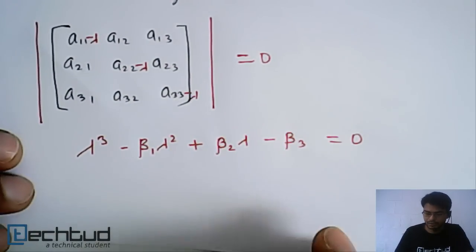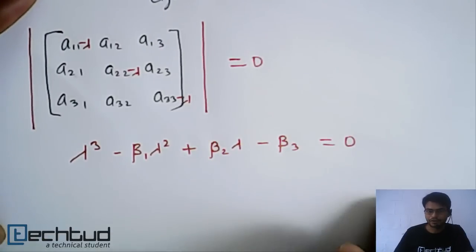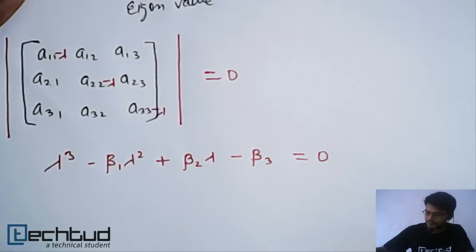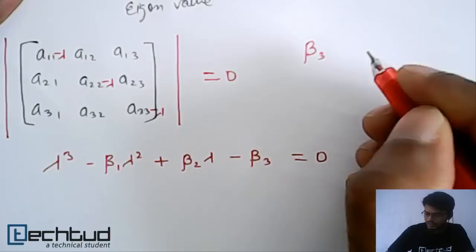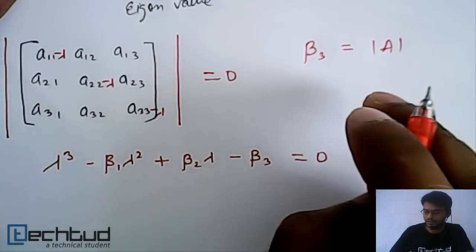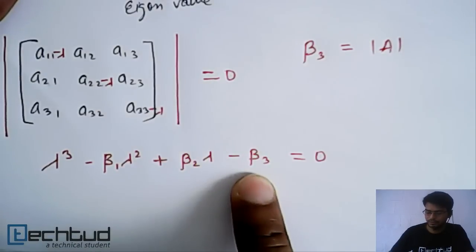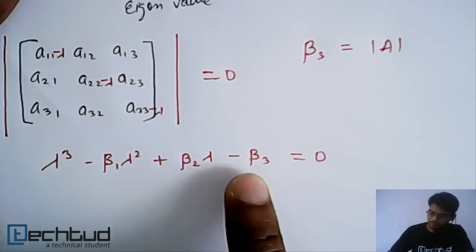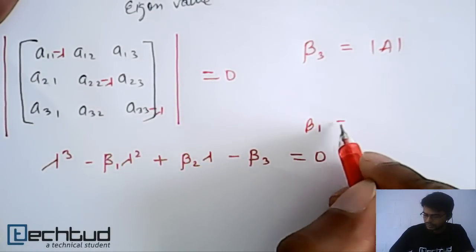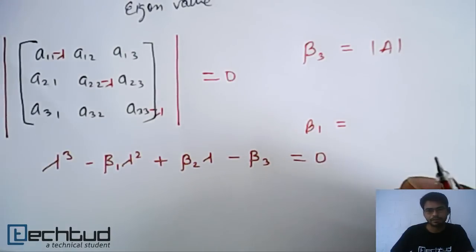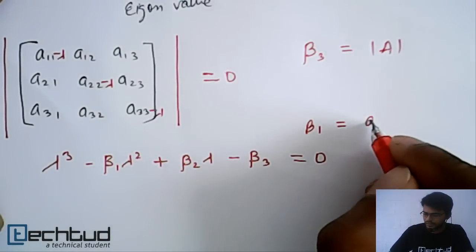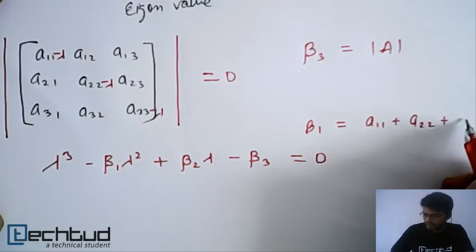If we remember what beta1, beta2, and beta3 are, we can directly solve the problem. Beta3 is simply the determinant of the original matrix A. Beta1 is the sum of the principal diagonal elements — that is, the trace of the matrix: A11 plus A22 plus A33.